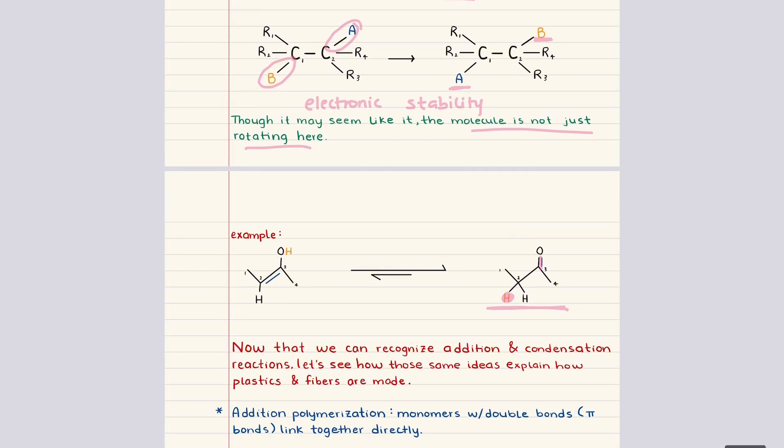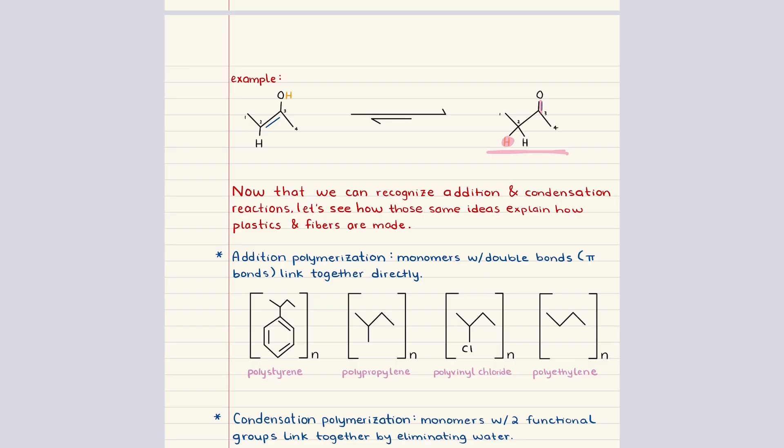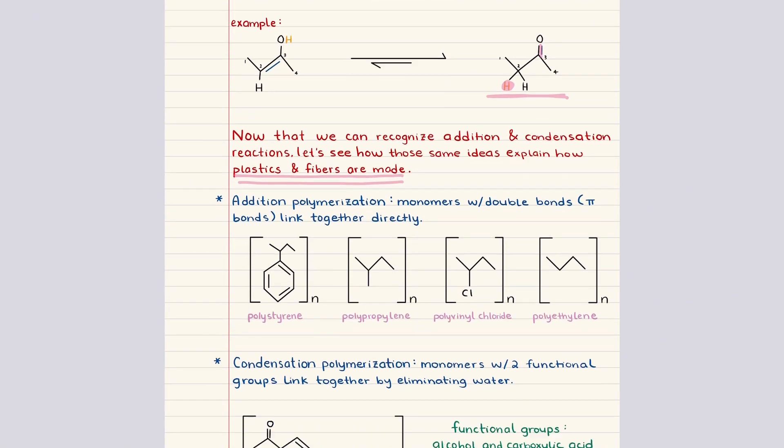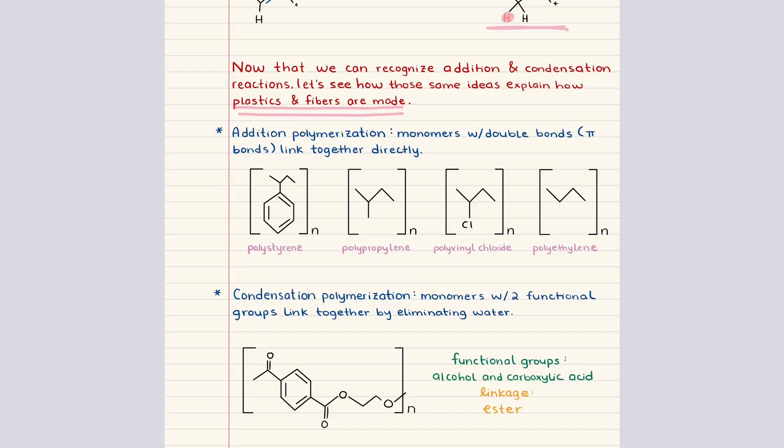Now that we have a solid understanding of addition, elimination, substitution, and rearrangement reactions, we can start to appreciate how these same ideas scale up into processes that create materials we interact with every day. Once we recognize the patterns of atoms being added or removed, it becomes much easier to understand how small molecules combine to form things like plastics, fibers, and other large scale structures. To make that connection, we shift from individual reactions to polymerization, which is simply the process of linking many small repeating units together to make a long chain.